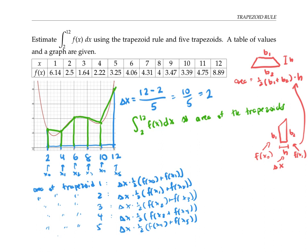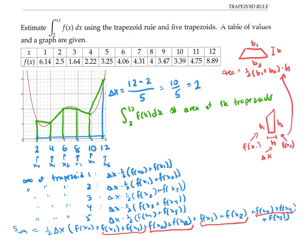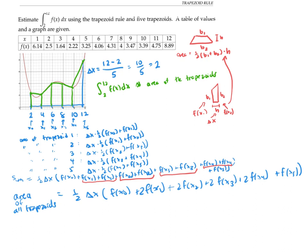If I add these all up and pull out the one half delta X, then I get one half delta X times F of X0 plus F of X1 plus F of X1 again, plus F of X2 plus F of X2 again, and so on. Notice that everything gets repeated twice except for F of X0 at the beginning and F of X5 at the end. And now I can rewrite my formula for the total area of all trapezoids as one half delta X times F of X0 plus twice F of X1 and so on, ending with a single F of X5.